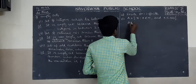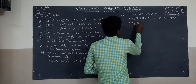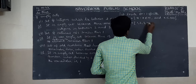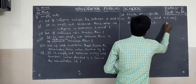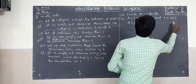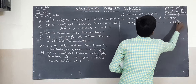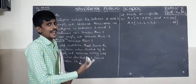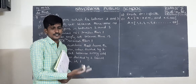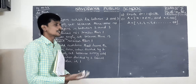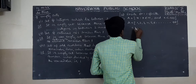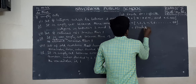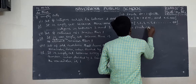So A equals 1, 2, 3, 4, 5, 6, and so on up to 99. How many elements are there? Just 99. It is countable. So it is a finite set.